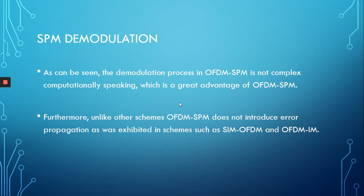What do I mean by error propagation? If I were to detect the power of a received subcarrier and detect it incorrectly — say it was originally a 1 but I detected it as a 0 — would this necessarily cause me to detect the adjacent subcarrier's power incorrectly, or perhaps cause me to detect the QPSK symbol incorrectly? As it turns out, OFDM-SPM does not suffer from this issue.